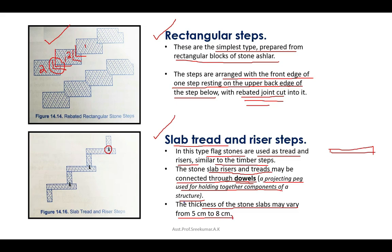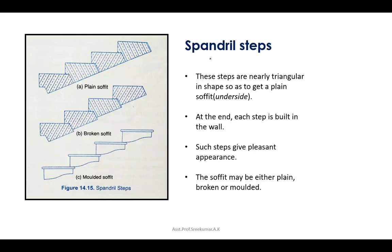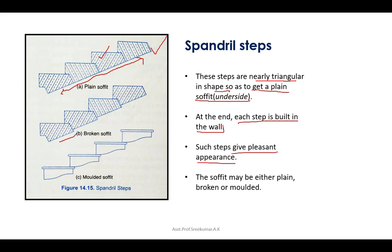The third type is spandrel steps. These steps are nearly triangular in shape so as to get a plain soffit — the underside of a stair or other architectural component — at the end. Each step is built into the wall. Different types include plain soffit, broken soffit, and molded soffit.